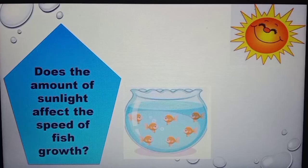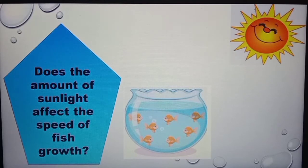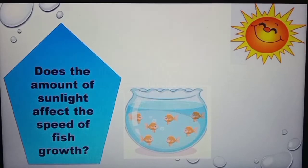Let's look at an example. Does the amount of sunlight affect the speed of fish growth? To test this experiment, purchase small fish and place them in rooms that receive different amounts of sunlight. The length of the fish will be measured weekly for 6 months. Write down all the things that can affect the fish.